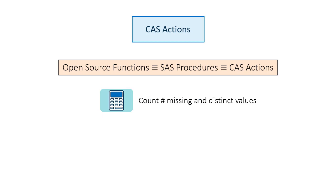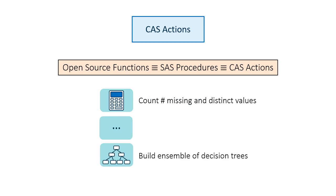A CAS action can be something as simple as counting the number of missing and distinct values in a dataset, or something as complex as building an ensemble of decision trees to predict a target.